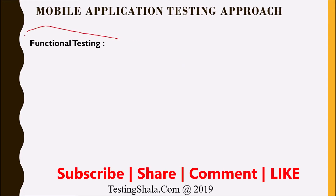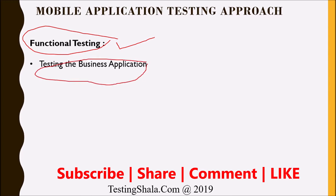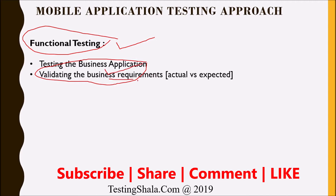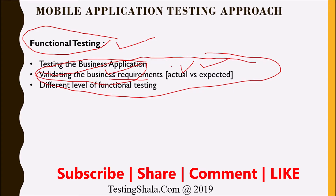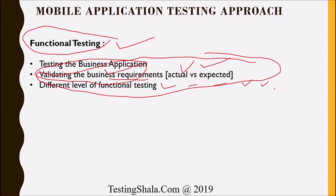The next type of testing is functional testing. This is the core testing we perform on mobile apps, where we test all business applications implemented as an app — validating every business requirement against what is expected versus what is actually delivered. We also perform different levels of functional testing: black-box testing, white-box testing, integration testing, system testing, user acceptance testing, and exploratory testing.